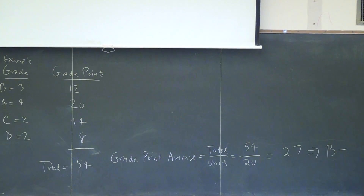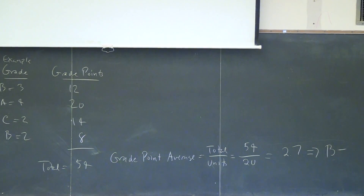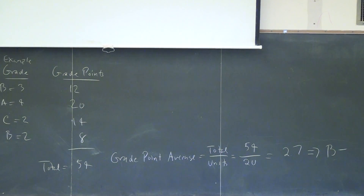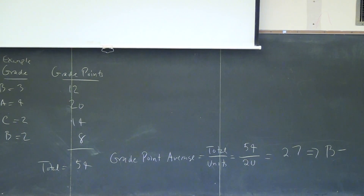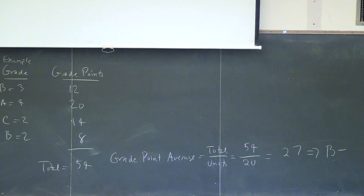So a 2.7 is the same as a B minus. That is how your grade was calculated for this exam.